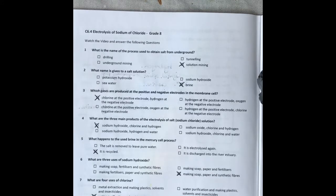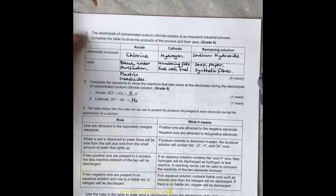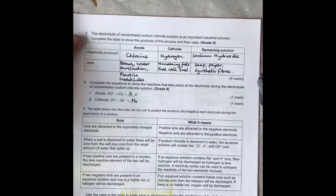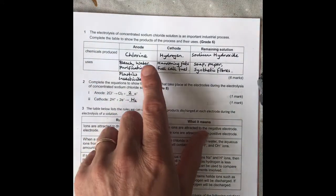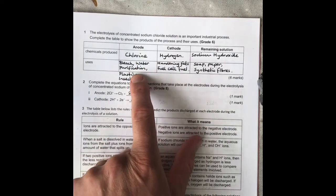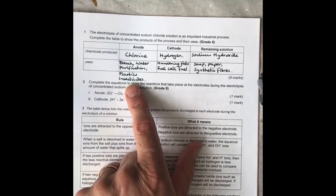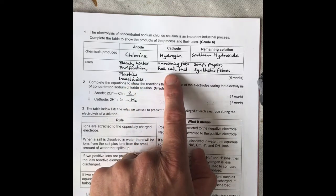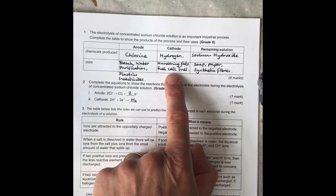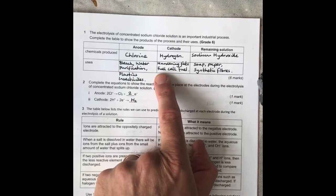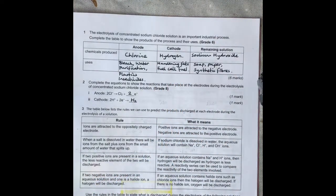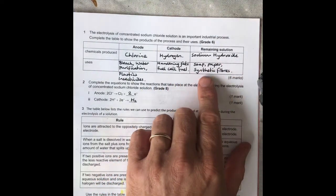The electrolysis of concentrated sodium chloride solution is an important industrial process. Complete the table with the products and the uses. The chemical at the anode is chlorine - its uses are bleach, water purification, plastics, and insecticides. At the cathode it's hydrogen, and that's used for hardening fats, so turning vegetable oil into margarine, and fuel for the fuel cell. The remaining solution is sodium hydroxide, and that is used for soap, paper, and synthetic fibers.